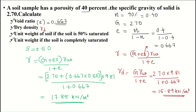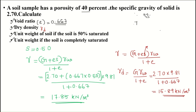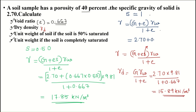Next, we need to find out the unit weight if the soil is completely saturated. Completely saturated means degree of saturation S = 1. For complete saturation, the equation for gamma becomes: gamma_sat = (G + e) · γ_w / (1 + e). G is 2.70, e is 0.667, and γ_w is 9.81, divided by (1 + 0.667). Computing this, we get 19.81 kilonewtons per meter cubed.